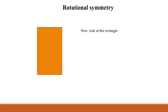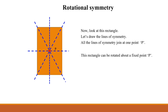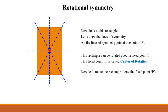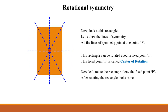Now look at this rectangle. Let's draw the lines of symmetry. Here are the lines of symmetry, and this is the point where all the lines of symmetry join together. This rectangle can be rotated about a fixed point P. This fixed point P is called the center of rotation. Now let's rotate the rectangle along the fixed point P. After rotating, the rectangle looks the same. This type of rotation or turning a figure is called rotational symmetry.